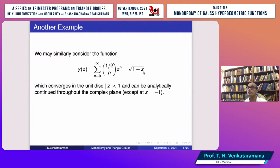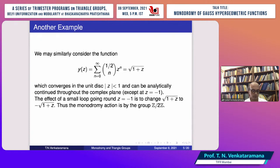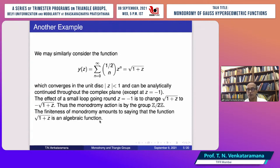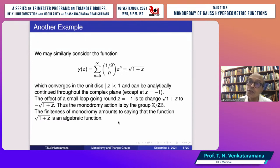Another example of a multi-valued function is √(1+z). Using the binomial theorem, this can be written as a convergent power series for |z| < 1, and analytically continued throughout the complex plane as a multi-valued function. The effect of a small loop around z = −1 is to change the solution √(1+z) to −√(1+z), so the monodromy action is by ℤ/2ℤ. The finiteness of the monodromy amounts to saying √(1+z) is an algebraic function. In general, the monodromy action is by a finite group if and only if the solution is algebraic.